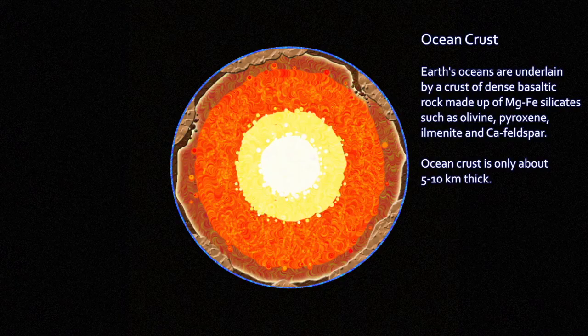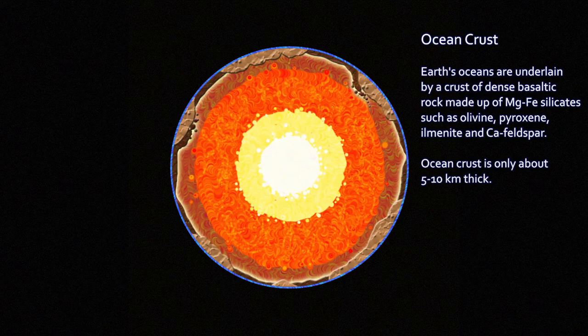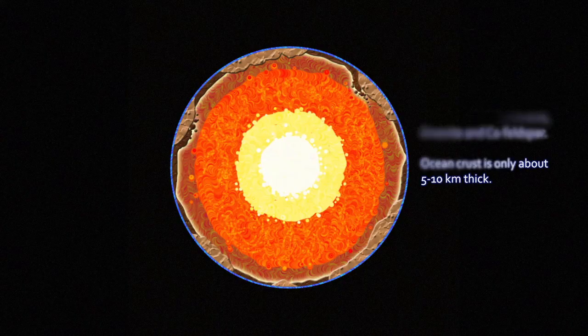Oceanic crust and continental crust. Ocean crust is thin — only about 5 to 10 kilometers thick — and it seems to be produced at these seafloor spreading centers, being made up of dense magnesium-iron silicates such as minerals olivine, pyroxene, ilmenite, and feldspars that are rich in calcium, along with minor minerals like magnetite.